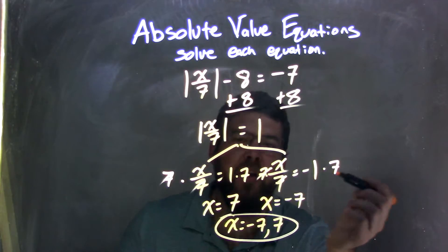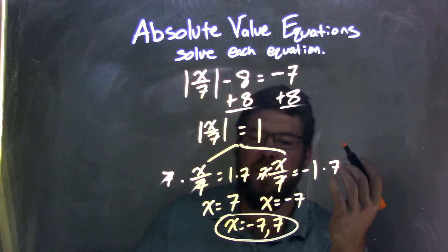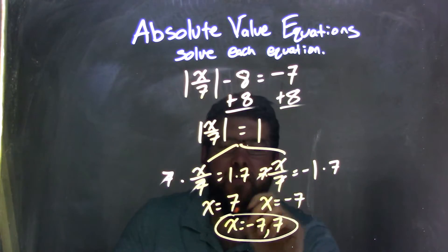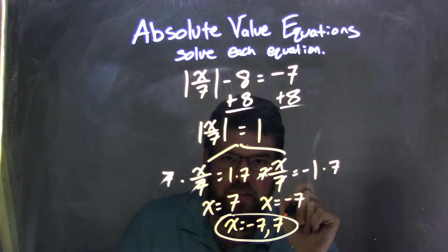From there, I had to write it from least to greatest, and so we have now our final answer of x equals negative 7 and positive 7.